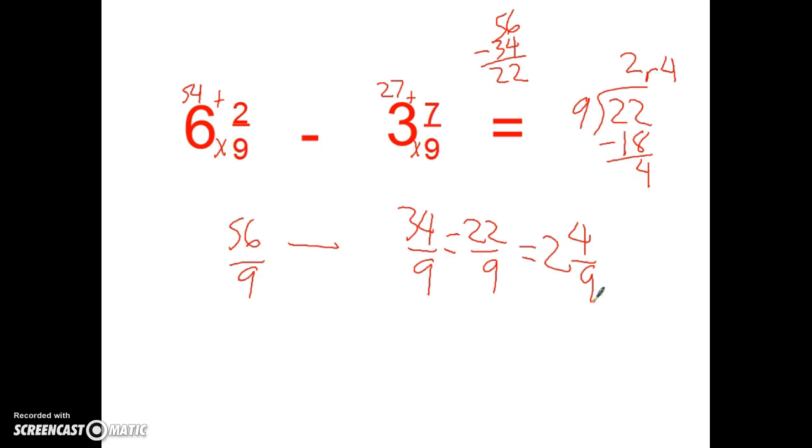Before I end it, I'm going to show you a fast way just to check to see if your answer is reasonable. If I cover up this fraction part and I just go, oh, I've got 6 minus 3, which equals 3. Is my answer close to 3? 2 and 4 ninths. That's pretty close.